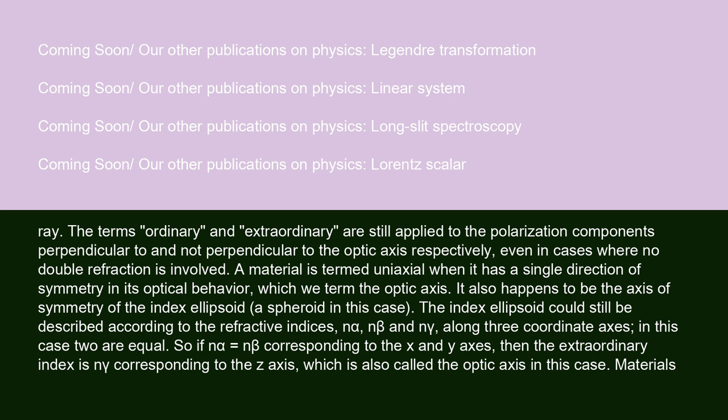A material is termed uniaxial when it has a single direction of symmetry in its optical behavior, which we term the optic axis. It also happens to be the axis of symmetry of the index ellipsoid, a spheroid in this case. The index ellipsoid could still be described according to the refractive indices n-alpha, n-beta, and n-gamma along three coordinate axes. In this case, two are equal: so if n-alpha equals n-beta corresponding to the x- and y-axes, then the extraordinary index is n-gamma corresponding to the z-axis, which is also called the optic axis.